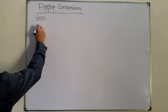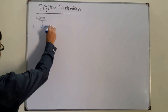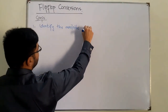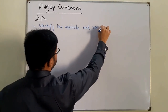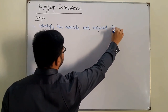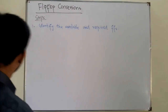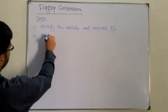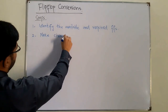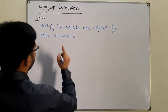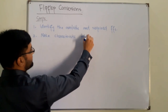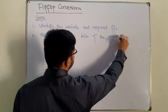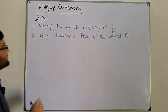We basically have five steps. The first step is to identify the available and required flip-flops — that is what you know from the given statement. The second step is to make the characteristic table of the required flip-flop.